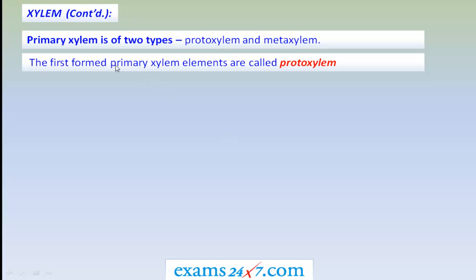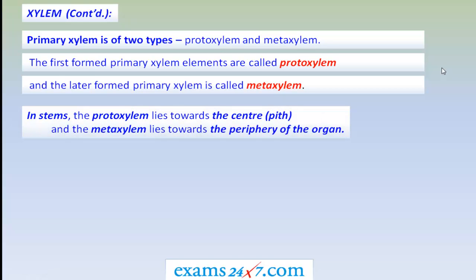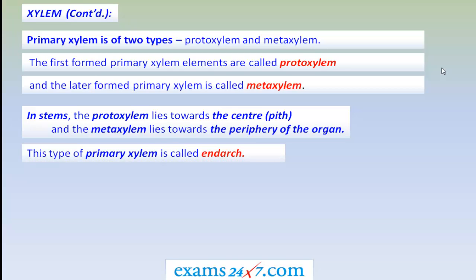The protoxylem, as the name signifies, is the first-formed primary xylem element, whereas the metaxylem is produced later in the life of a plant. In stems, the protoxylem is directed towards the center or pith of the stem, while the metaxylem lies towards the periphery. This characteristic arrangement specific to stems is called endarch.